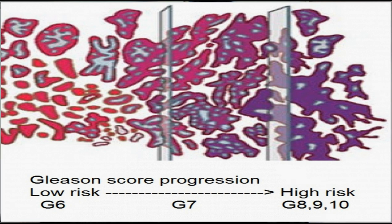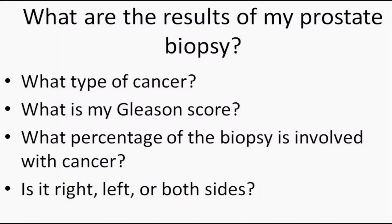So generally the urologist will say you have adenocarcinoma, Gleason score 6, 7, 8, 9, or 10. The next piece of information is the extent of biopsy involvement by the malignant cells. The higher the volume of cancer, the worse the outcome. You need to know, for example, if the urologist took 12, 13, or 14 cores — what number and what percentage of those cores were involved with the cancer. This is also very, very important.